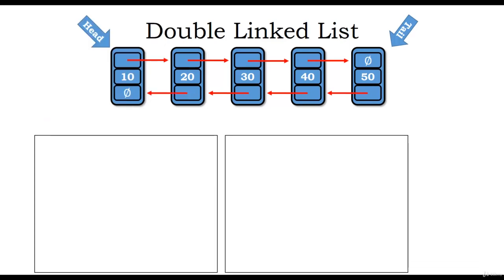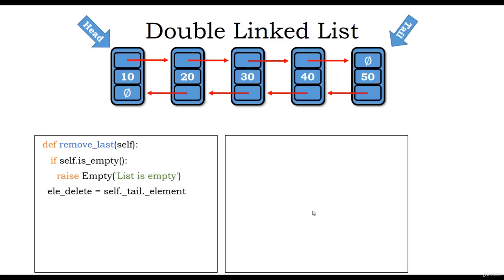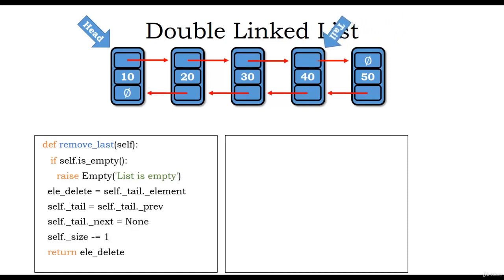To delete from the end, we define remove_last and check if the list is empty. We retrieve the element using elit_delete = self.tail.element. Then self.tail = self.tail.previous moves tail to node 40, self.tail.next = None, and we decrement the size and return the deleted element.